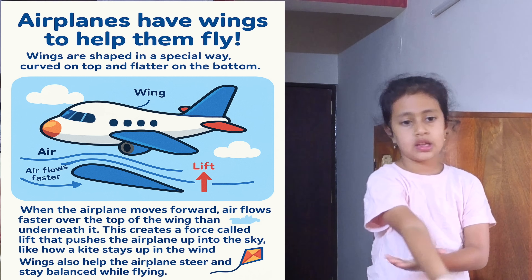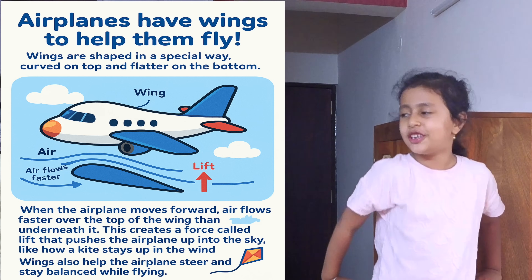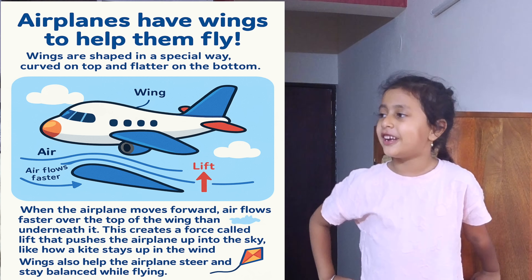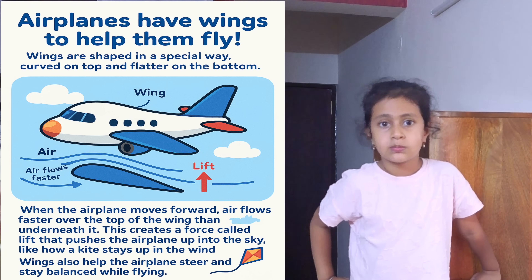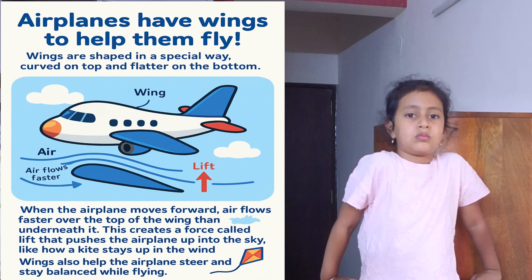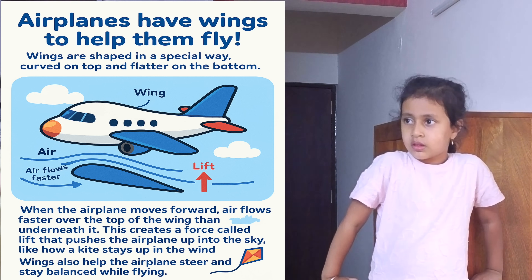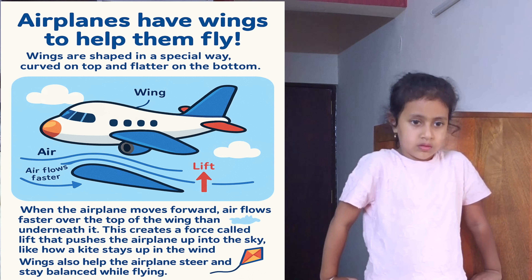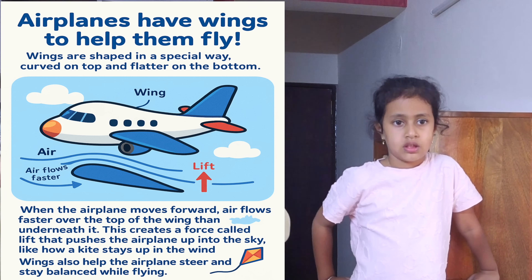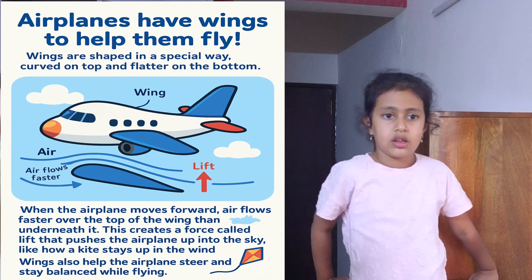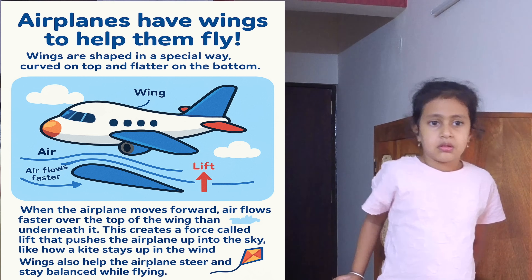So when the aeroplane moves forward — you must have seen it move forward before flying, first going on its wheels. When it moves forward, the air starts flowing. The faster it goes, the faster the air will flow over the top of the wing, not below it, because it is higher. The lower part, the air is either slow or not at all. So when the air flows very fast, it creates lift — lift that pushes the aeroplane into the sky.